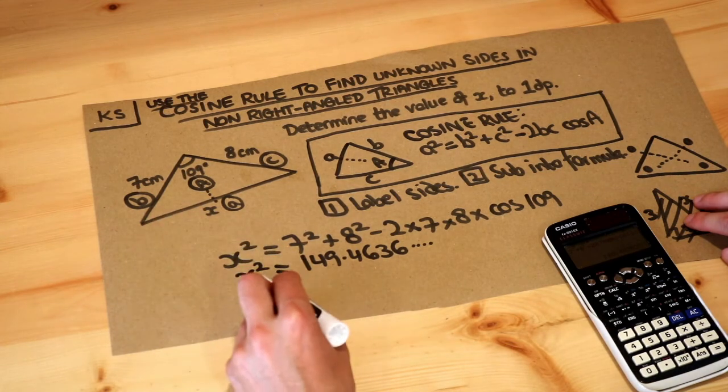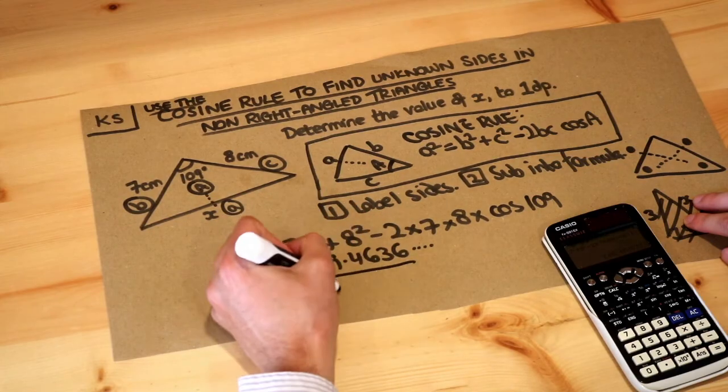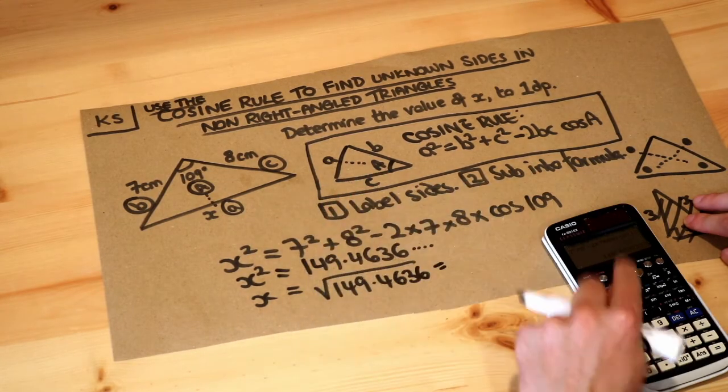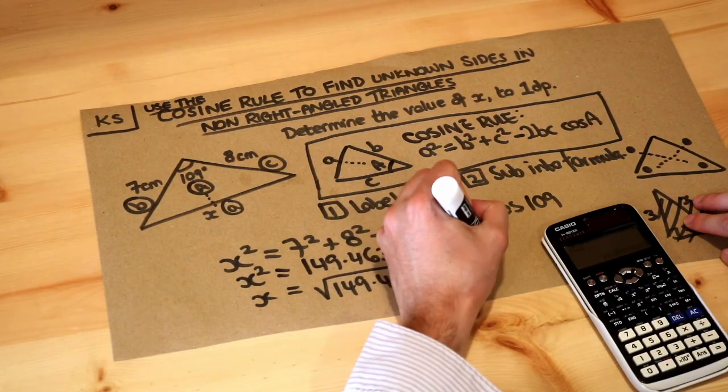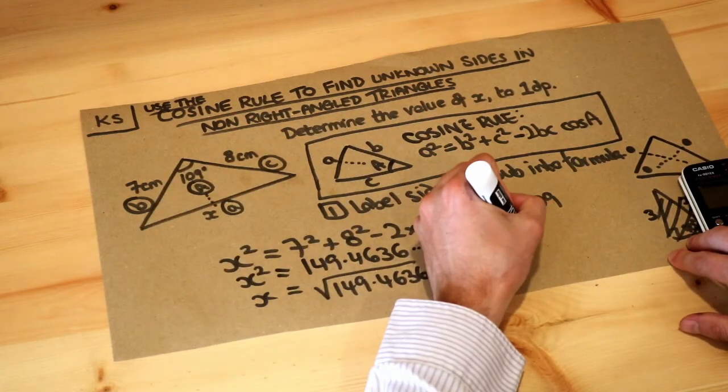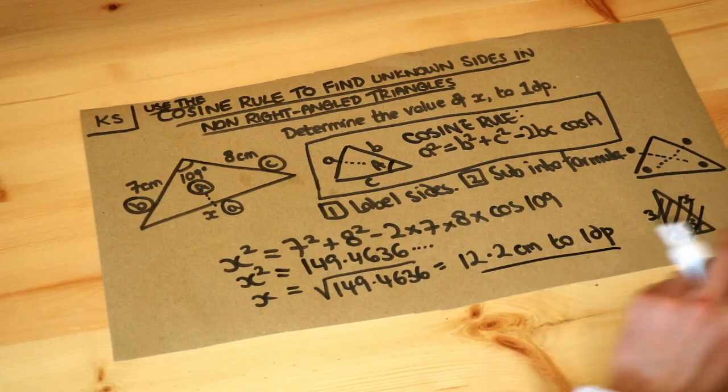And then we want to get rid of that squared, so we square root both sides. So we square root 149.4636, and that will give me a length of 12.2 centimeters to one decimal place, and that is the final answer.